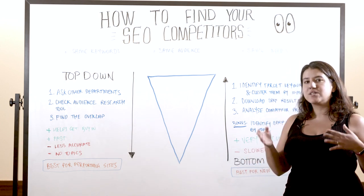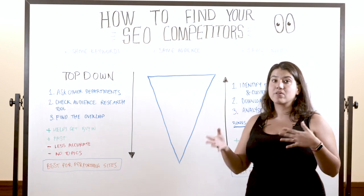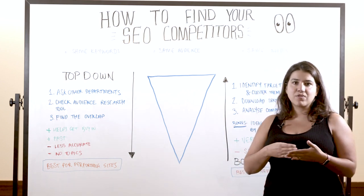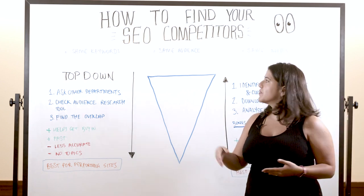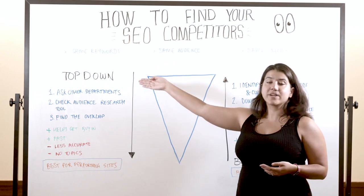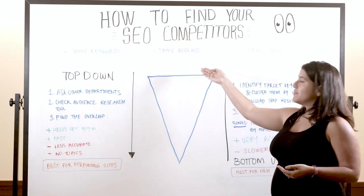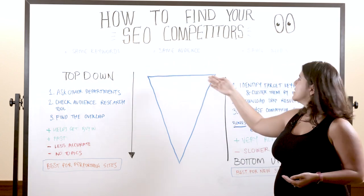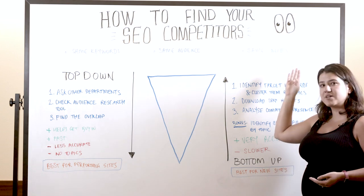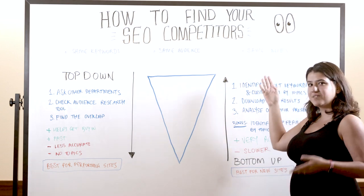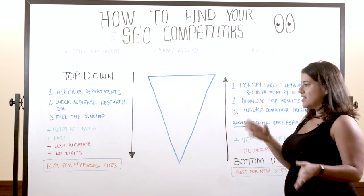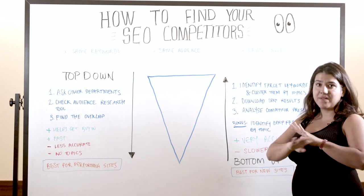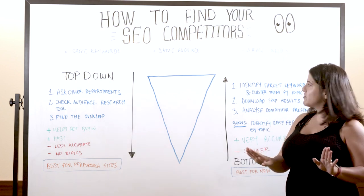So how do we know that someone's a competitor on search? Essentially they need to meet three criteria: they're targeting the same keywords as you, they're speaking to the same audience, and they solve for the same consumer need as you. That is, if your target audience goes with them, they have no more need for you.